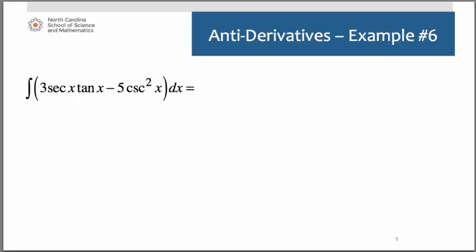Let's continue with our examples and look at some antiderivatives that are going to involve trig functions. Here we have the antiderivative of 3 secant x tangent x minus 5 cosecant squared x dx. There is no need to rewrite this integrand because we do have antiderivative rules both for secant x tangent x and for cosecant squared of x.